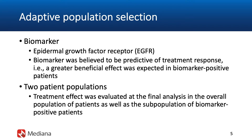A fair amount of heterogeneity was expected in the trial's overall patient population. To account for this, a multi-population design was employed in the Saturn trial — one of the first successful applications of this approach. According to this multi-population design, the treatment effect was evaluated at the final analysis in two patient populations: the overall population of enrolled patients and the predefined subset of EGFR positive patients.